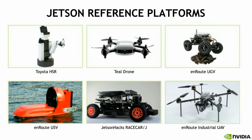Toyota has their HSR, or Human Support Robot, in the RoboCup at Home competition aimed at personal assistance to the disabled and elderly. Teal Drone has their micro-UAV that's highly integrated with Jetson and capable of more than 70 miles per hour of sustained flight. Enroute Lab has their off-road ground vehicle, maritime service vessel, and industrial inspection drone in the program. There's also the MIT-inspired race car being offered by Jetson Hacks. Note that there are more reference platforms being added to the program in the future, and if you have a platform you'd like us to consider, please get in touch.